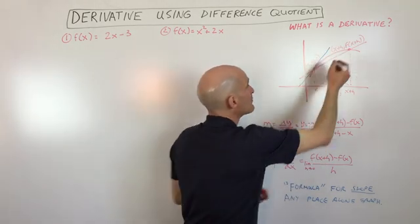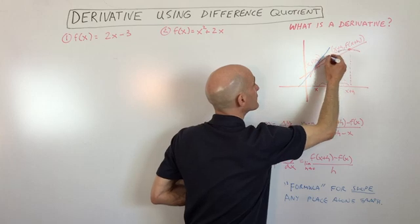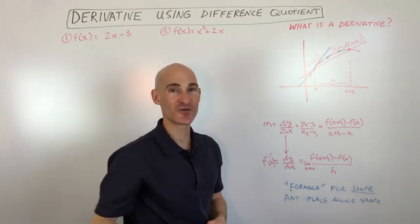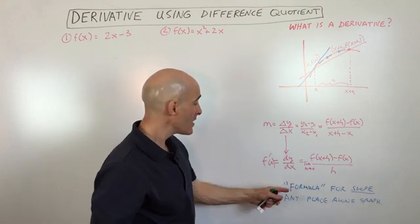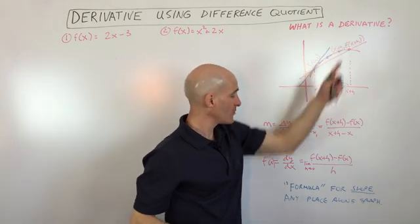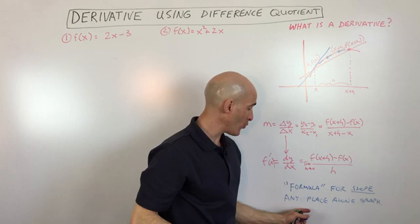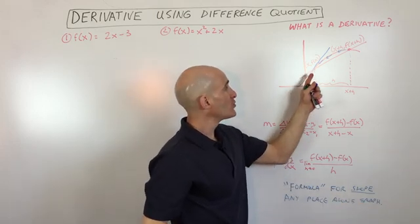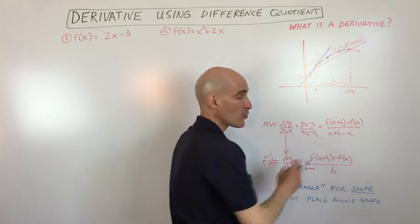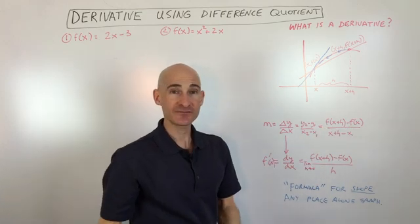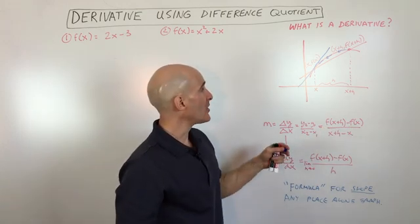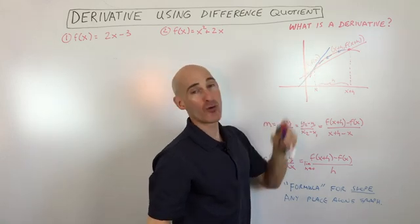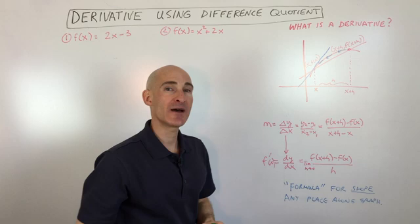Because this point is moving along the curve as h is getting smaller and smaller. So all the derivative is — it's a formula for the slope any place along the graph. When we simplify the difference quotient, we get an expression that allows us to find the slope at any x value along the graph. Let's do some examples.